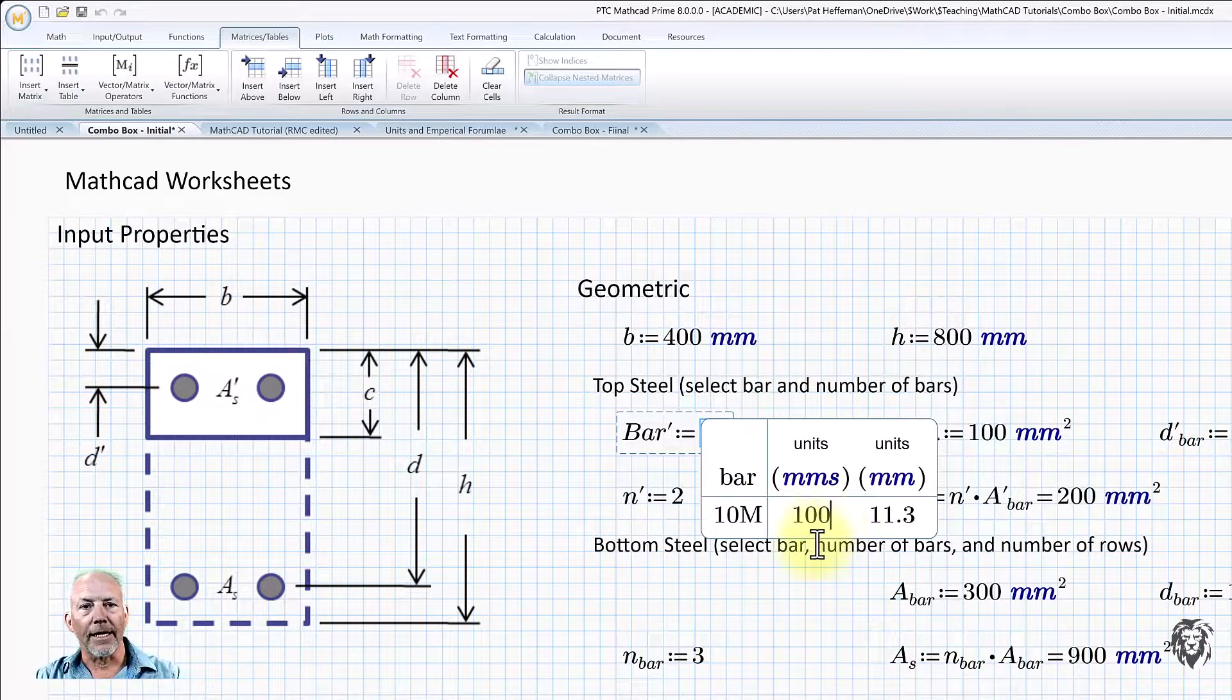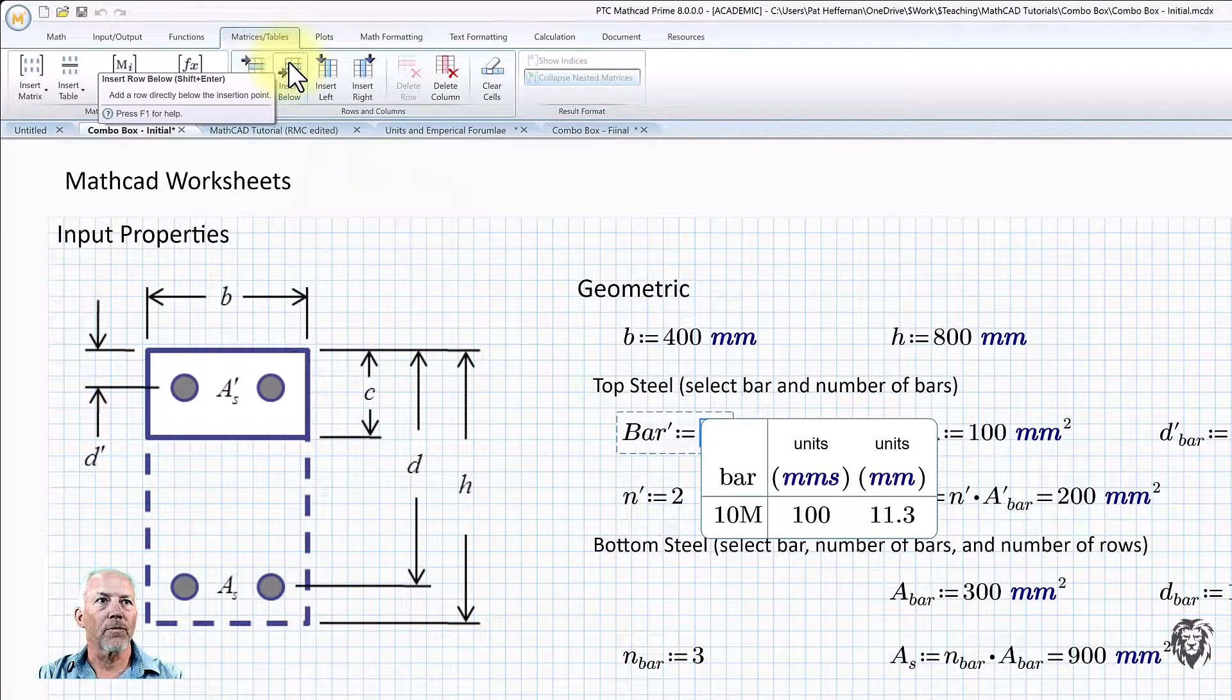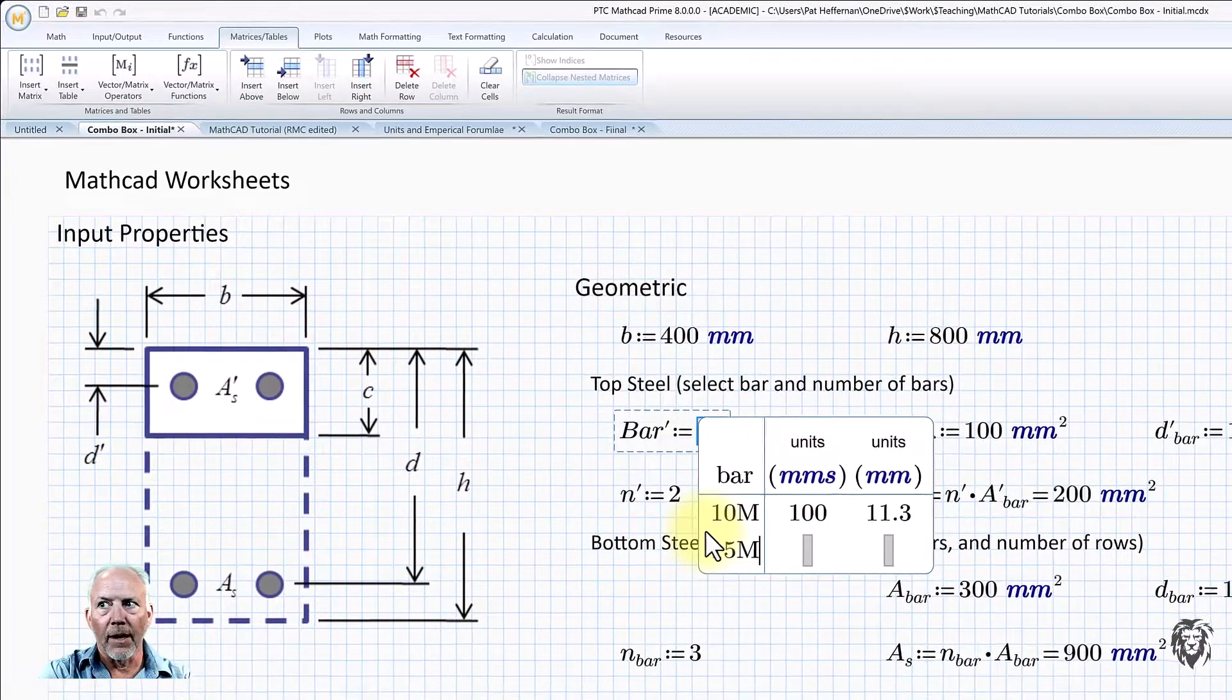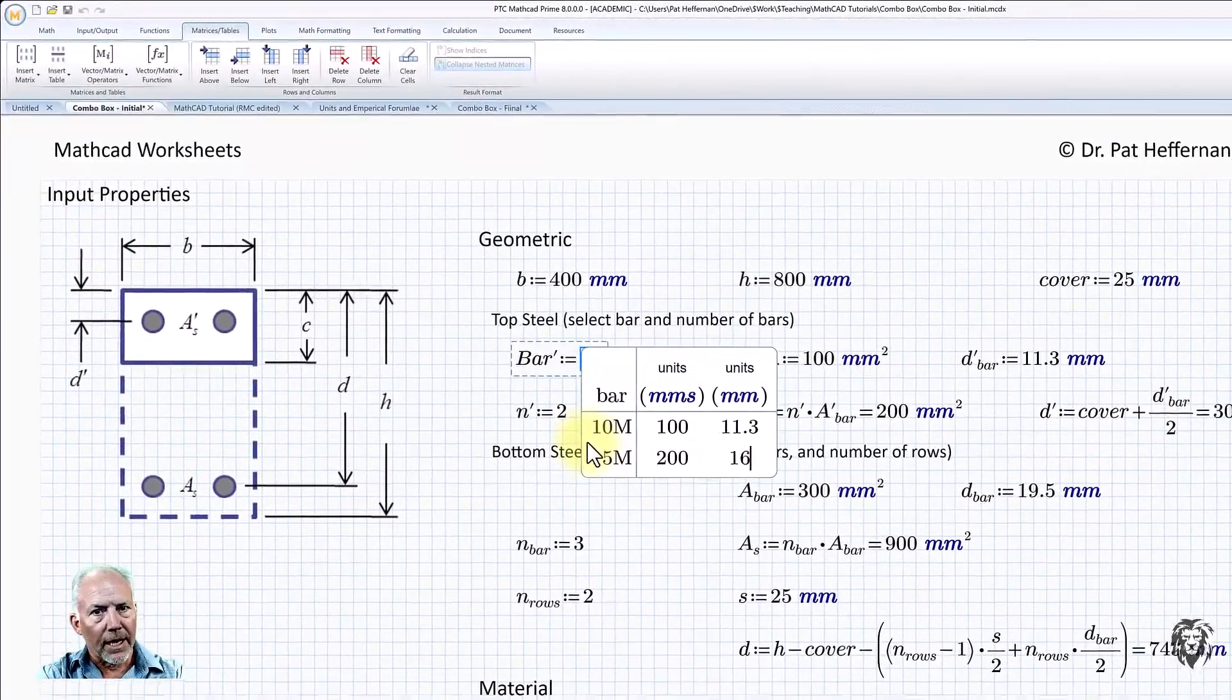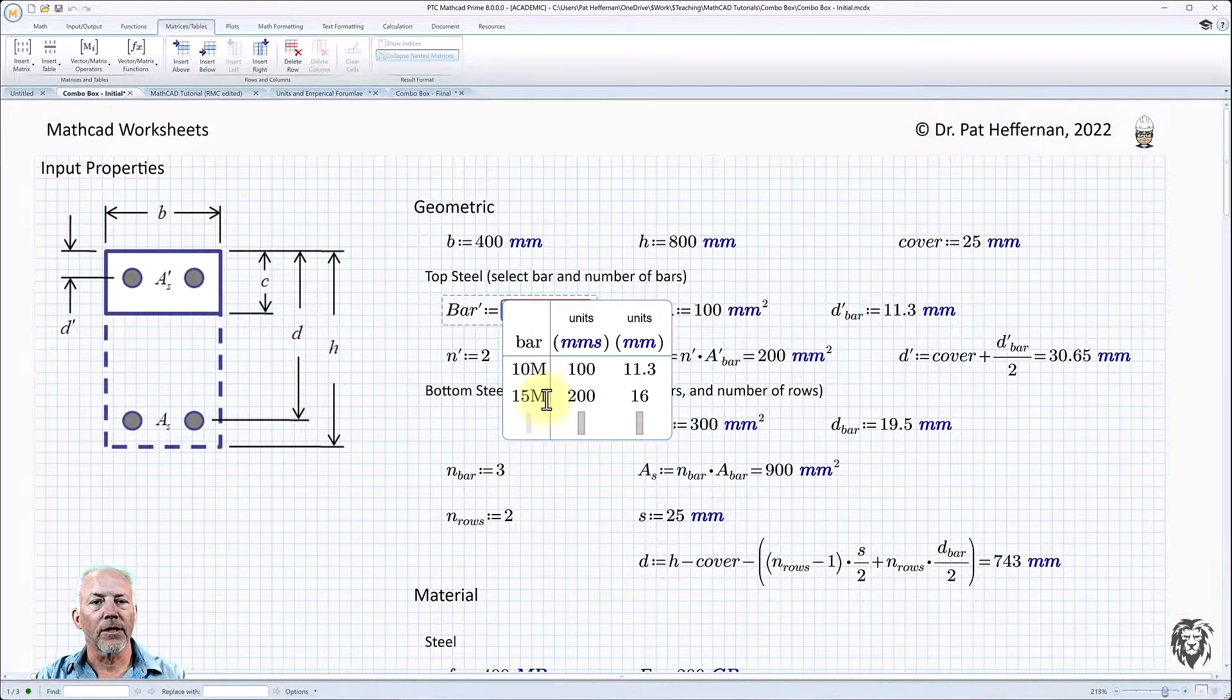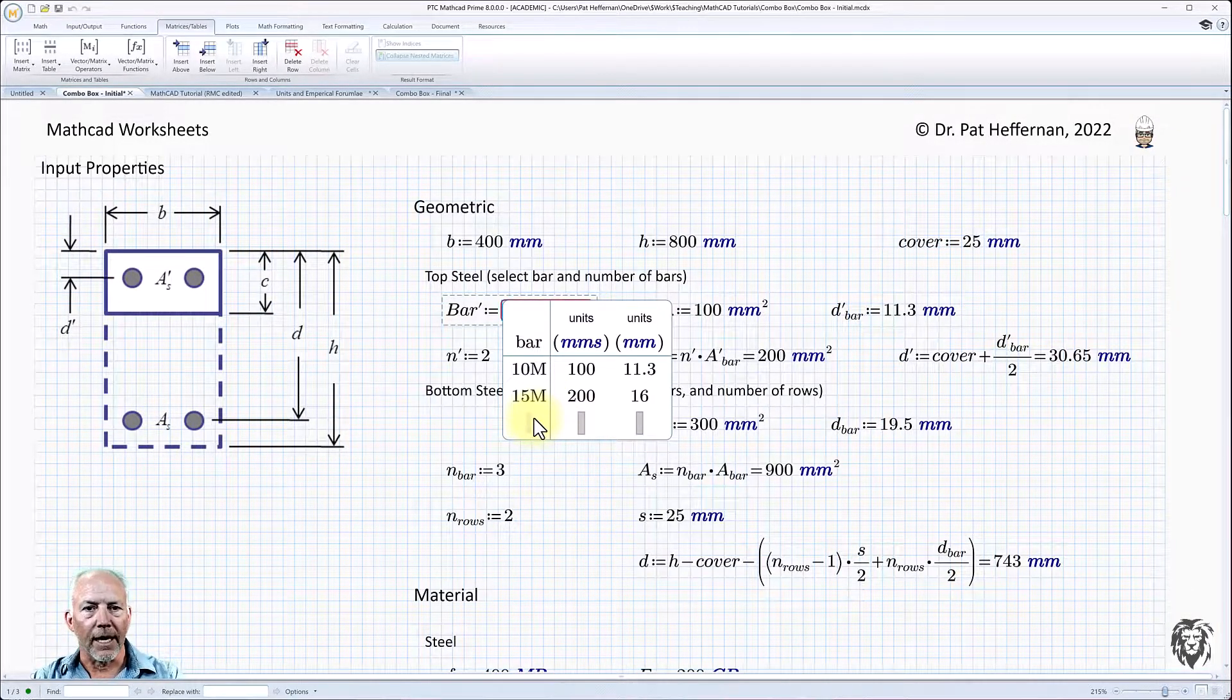And so 100 millimeter squared is the area of that bar. So now I need to add the successive bars that we're going to choose from. So again, I'm going to insert below, add another row, which is also the shift enter key. And we can enter in 15M, it has an area of 200. And I'm just tabbing between the columns and a diameter of 16 millimeters. We'll put us down to another row. And I'm going to go ahead and just proliferate this table. And then we'll tune back in once we have the table completed.